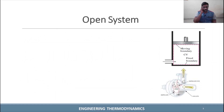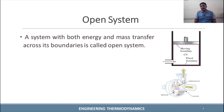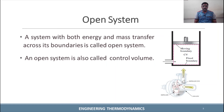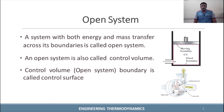Next is the open system. In an open system, both mass and energy can cross the boundary. Examples include a pump or similar equipment where fluid — water or gas — flows through. A system where both energy and mass can transfer is called an open system, also referred to as a control volume. The volume is fixed, but mass can enter and leave. The boundary in an open system is called the control surface, shown as a red dotted line.